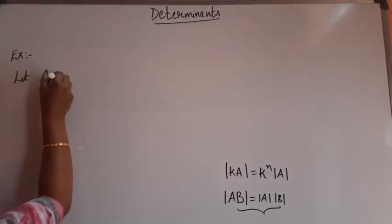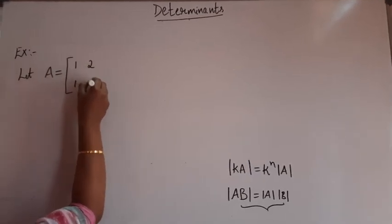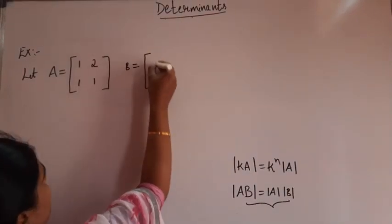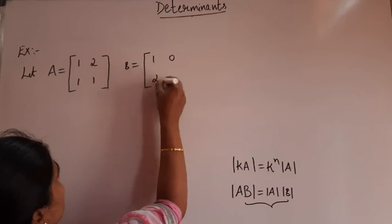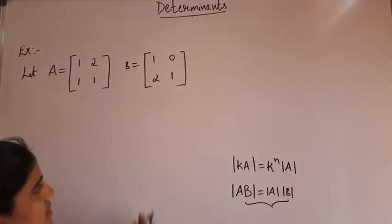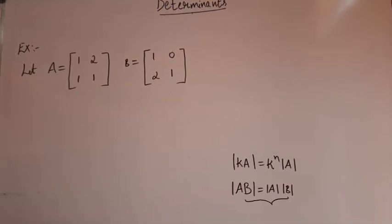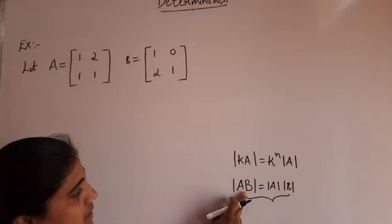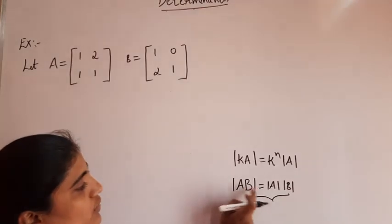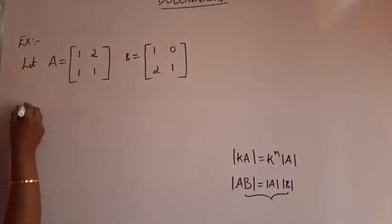Let us consider two matrices. Let matrix A equal [1, 2; 1, 1] and matrix B equal [1, 0; 2, 1]. You can take any matrices — either 2×2 or 3×3. To find the LHS, that is determinant of AB, we first have to find the matrix AB, then take the determinant.